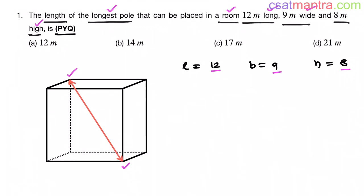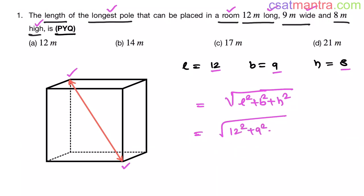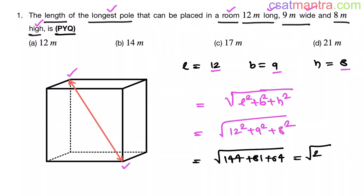The body diagonal equals the square root of length squared plus breadth squared plus height squared. So this is √(12² + 9² + 8²) = √(144 + 81 + 64) = √289 = 17 meters. So the longest pole would be 17 meters.